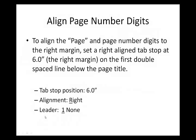The first formatting issue we're going to talk about is aligning the page number digits to the right margin. You do that by setting a right-aligned tab stop at six inches, which is the right margin, on the first double-spaced line below the page title. So when you open the Tabs dialog box, you're going to set a tab stop position at six inches, the alignment will be right, and the leader option will be none.